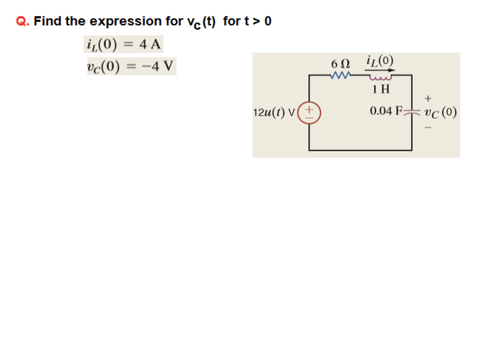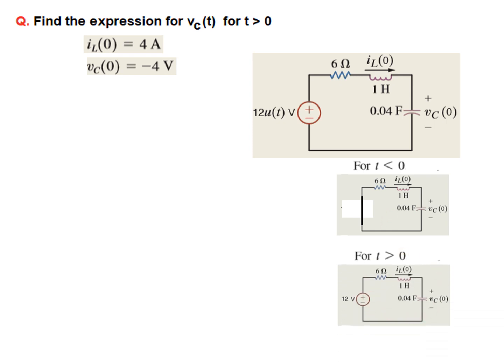So this is the problem. We have to find the expression for V_C(T). Note that generally we don't write C, but some books write C for the voltage across the capacitor; we just say V0 or V, meaning the voltage across the capacitor. Now what is given here: I(0) or I_L(0), that is the inductor current, is 4 ampere at T equal to 0. And similarly the voltage across the capacitor, V_C(0), is given as minus 4 volt. This is the circuit for T less than 0, and this is for T greater than 0.